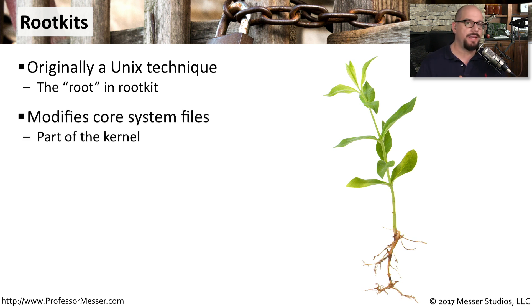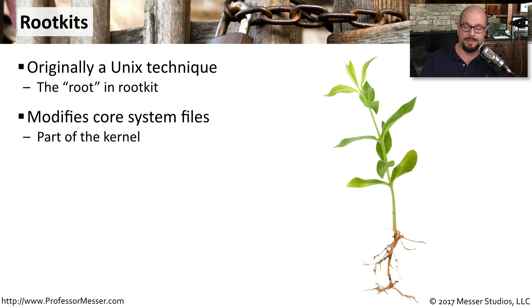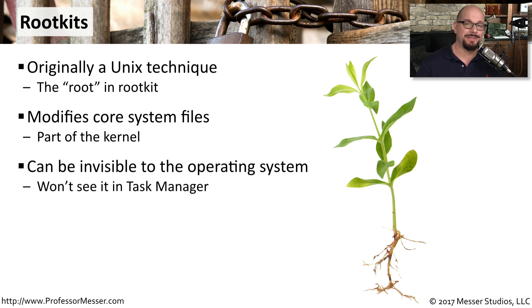A rootkit modifies the kernel of the operating system. It operates at the very lowest level of the operating system so that it can avoid a lot of antivirus or anti-malware software from identifying it. It's generally invisible because it's built into the kernel of the operating system itself.